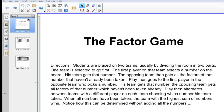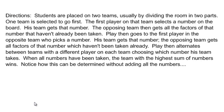The game is played like this. You divide your class into two teams — maybe a left side and a right side — into two teams. One team is picked to go first. The first player on that team will select a number from a board, and his team gets that many points. The opposing team gets all of the factors of that number that haven't already been taken.